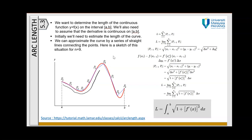We have this curve here, and to calculate the length of this curve we approximate by dividing it into a number of sub-intervals. We denote the first point as p₀, then divide into several sub-intervals, giving us several points denoted by pᵢ.